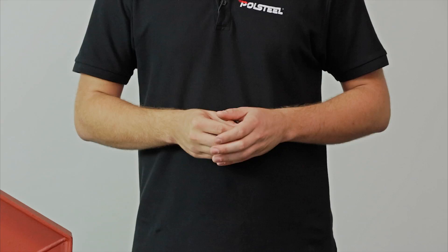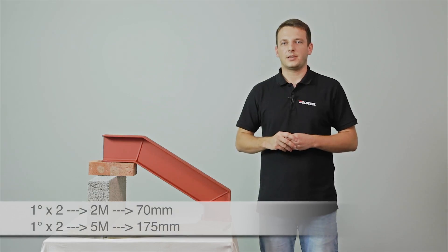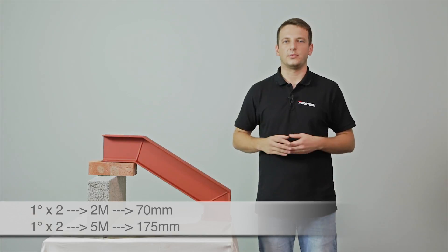When we've got two angles together in one structure and each one has a discrepancy of 1 degree, at 2m lengths the difference in height is 7cm and at 5m lengths the difference is 17.5cm, making the structure unsuitable for your project.